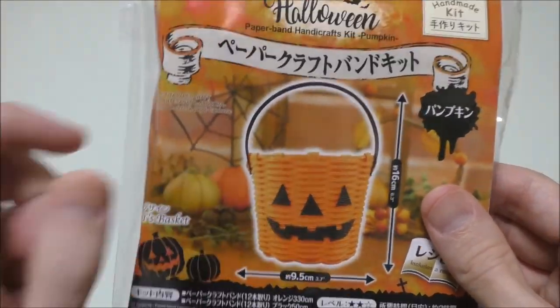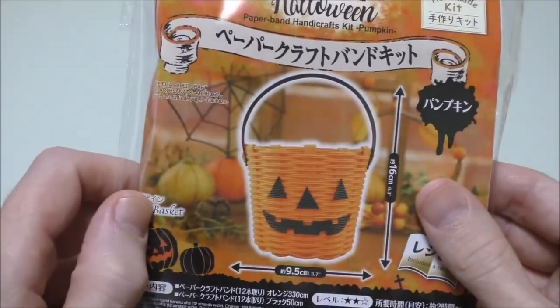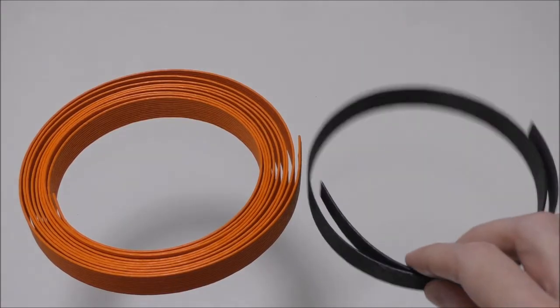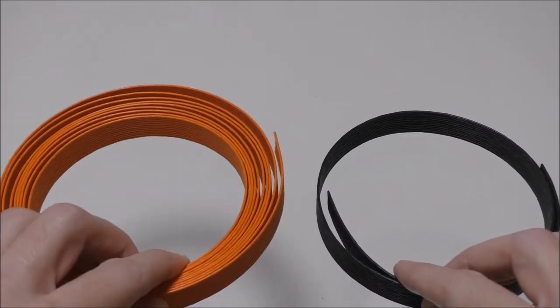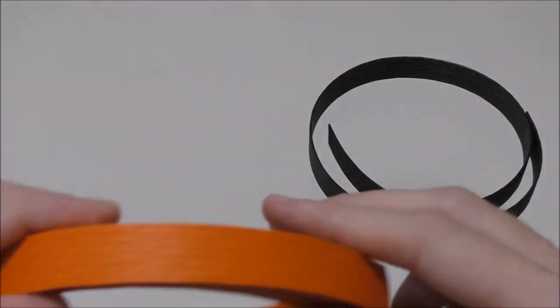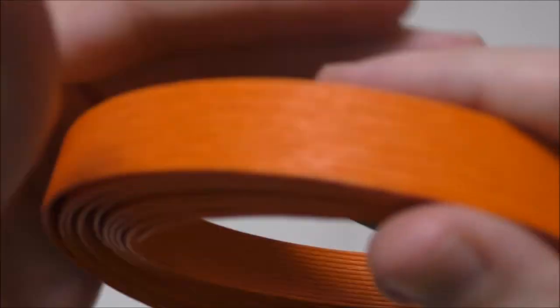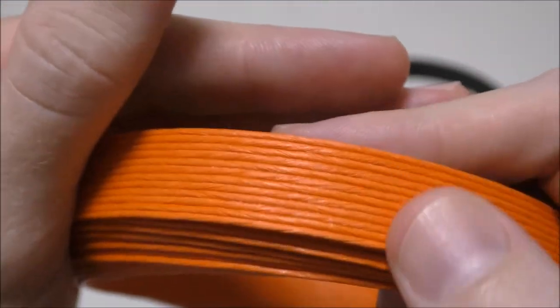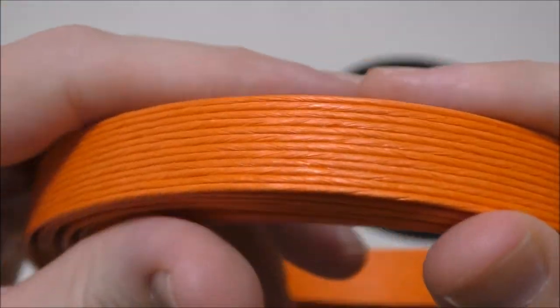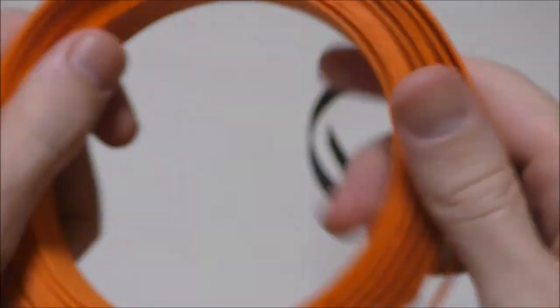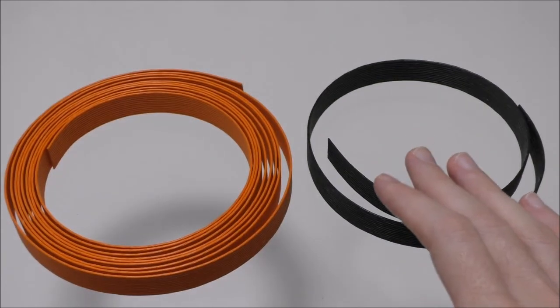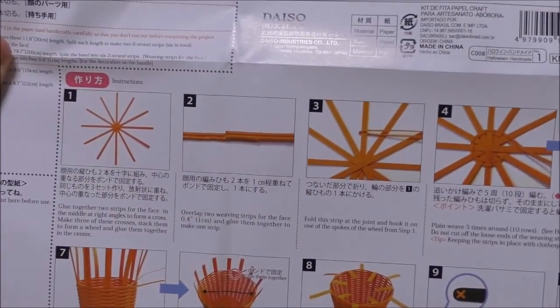But first things first, we want to find out what exactly is inside this packaging. Inside this kit we have both a black and an orange cord, the orange one being a lot longer. Each one of these is separated into 12 individual paper strings, I don't really know what you call them. And of course in addition to this the most important thing, the instructions.